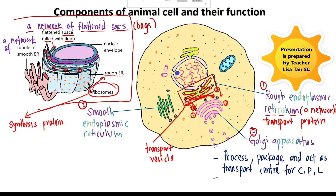Now we are going to look at the smooth endoplasmic reticulum. The structure of smooth ER: smooth ER is a network of tubules. There are many tubules and they are interconnected. You can see no ribosome is attached on the smooth ER, so they are just smooth.